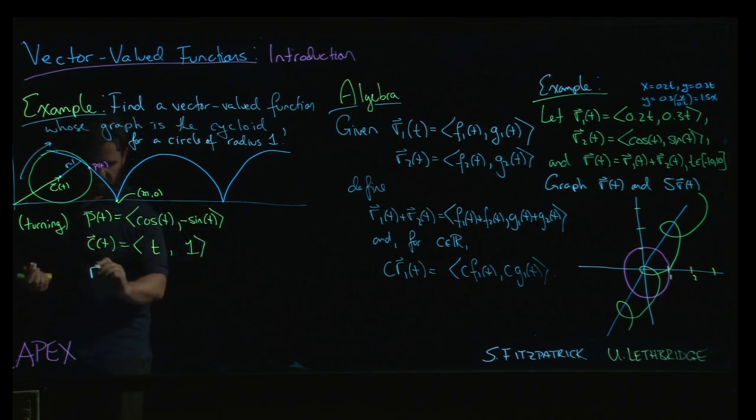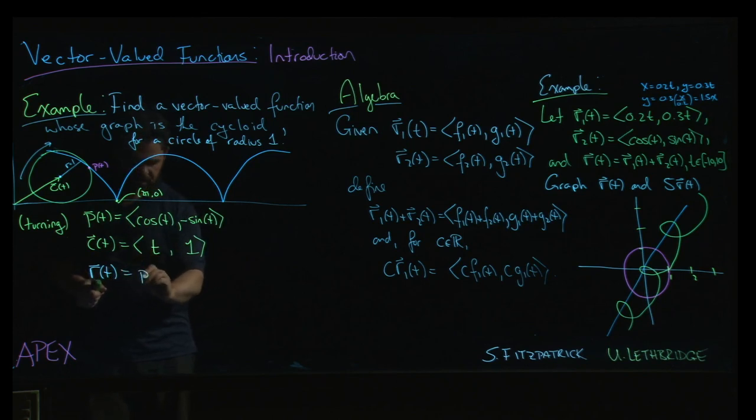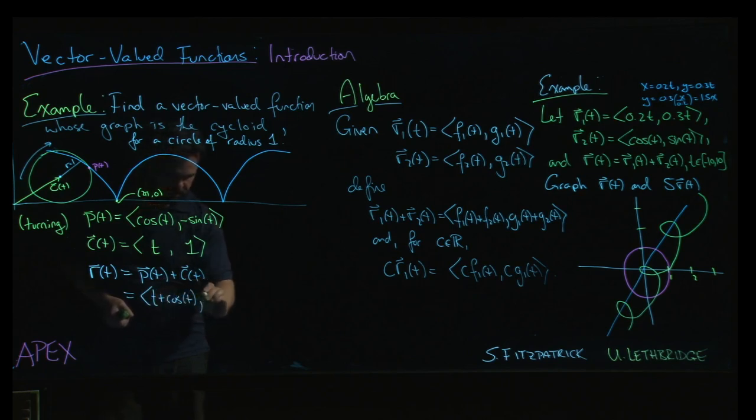So then the vector-valued function that describes the cycloid, it's just the combination of those two motions. The rotation and the translation gives you the rolling. So it's just P(t) plus C(t). Okay? And so that's going to be t plus cosine t, and then 1 minus sine t.